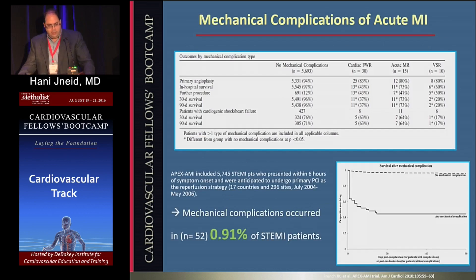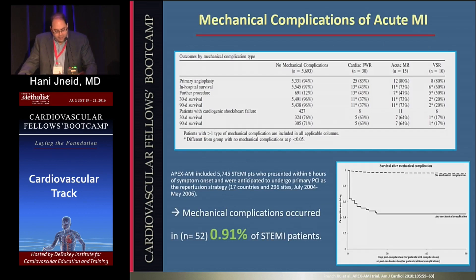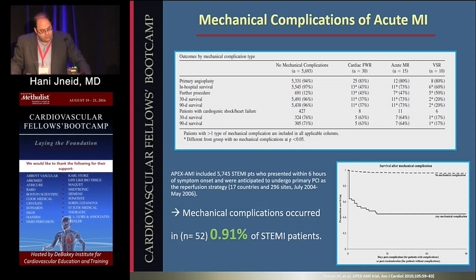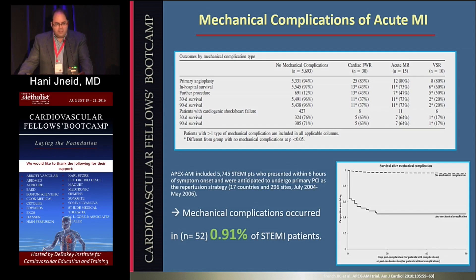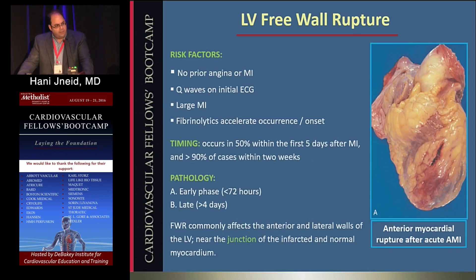The frequency is really less than 1%. From the APEX ST elevation MI trial, the occurrence was 0.91%. The Kaplan-Meier curves show survival at 90 days was 40%. This is maybe a decade old now, and I suspect survival has improved a bit with the use of percutaneous circulatory assist devices.